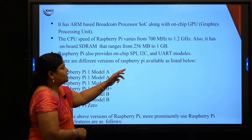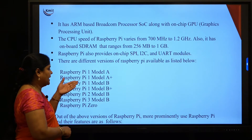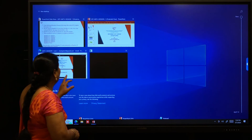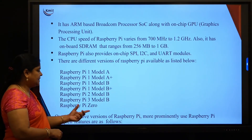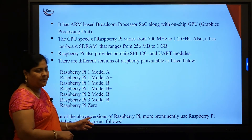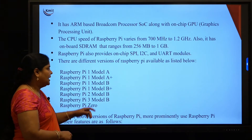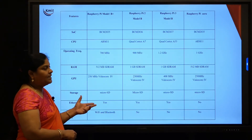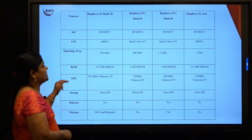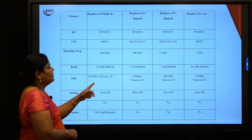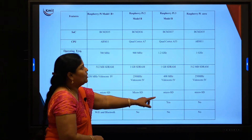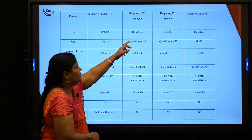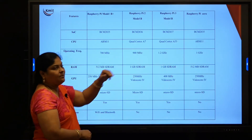There are different versions of Raspberry Pi: Model 1A, 1A+, 1B, 1B+, Raspberry Pi 2 Model B, and Raspberry Pi 0. The most prominently used versions are Pi 3B and 3B+. A comparison table shows features like SOC — BCM2835, BCM2836, BCM2837 — for different boards. CPU ranges from ARM11 to quad-core Cortex. RAM is 512 MB for Model B+ and Pi 0, and 1 GB for Pi 2 and Pi 3.